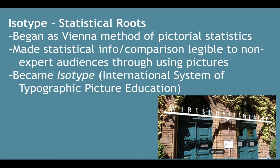It has roots in statistics. It began with the name the Vienna Method of Pictorial Statistics, and it helps to make statistical information and comparison legible to non-expert audiences through using pictures. The thinking is the pictures are simple — people can add them together, see them, and it makes it more simple for them to understand.